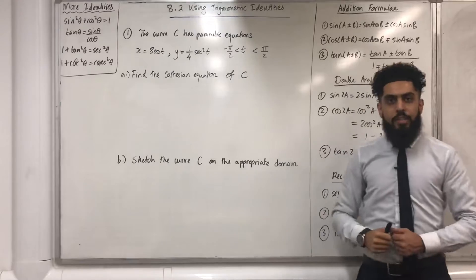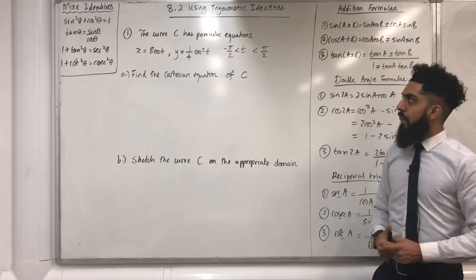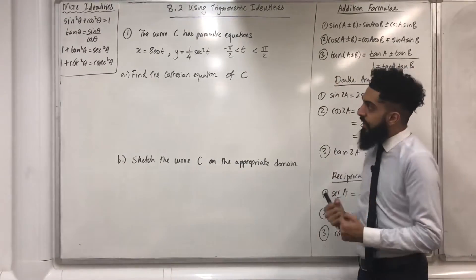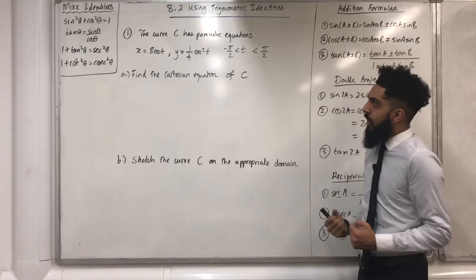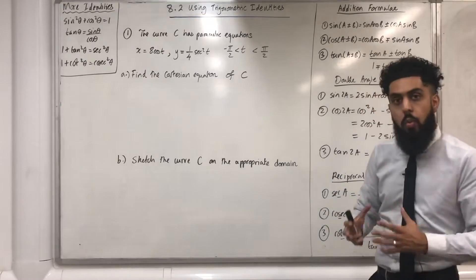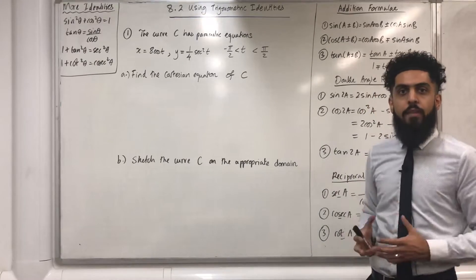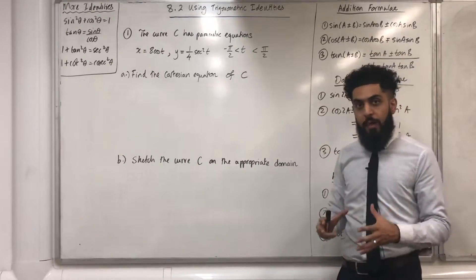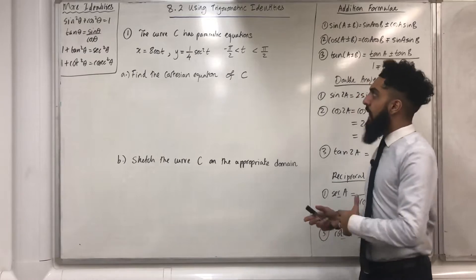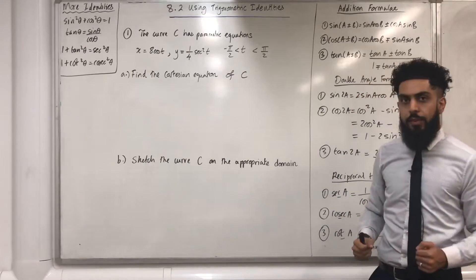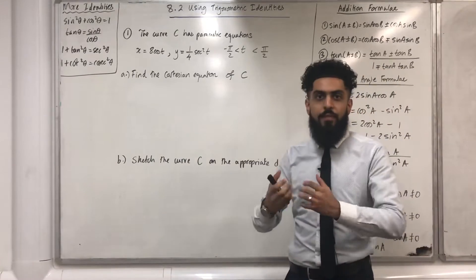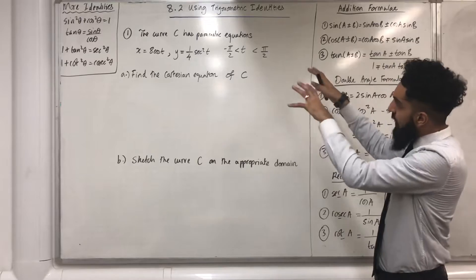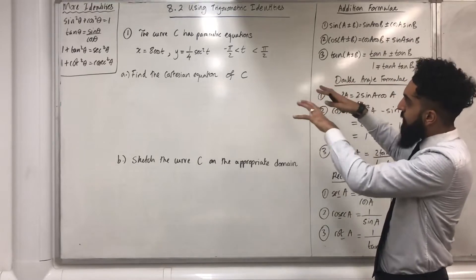Let's have a look at Question 1. It says the curve C has parametric equations x equals 8cos(t), y equals 1 over 4 sec²(t). t is more than minus π/2 but less than π/2, so t is measured in radians because the interval is in terms of π.